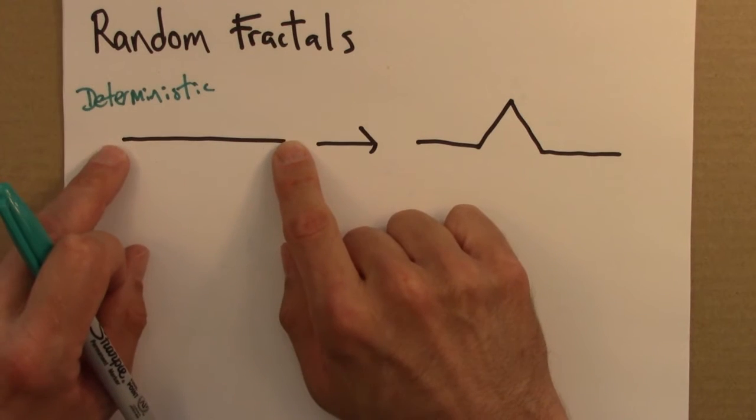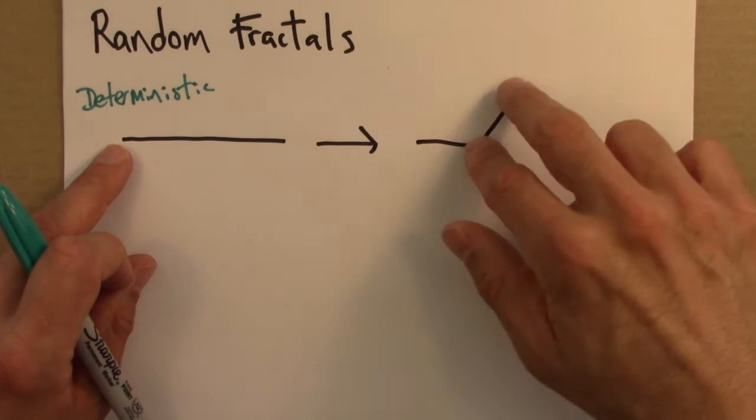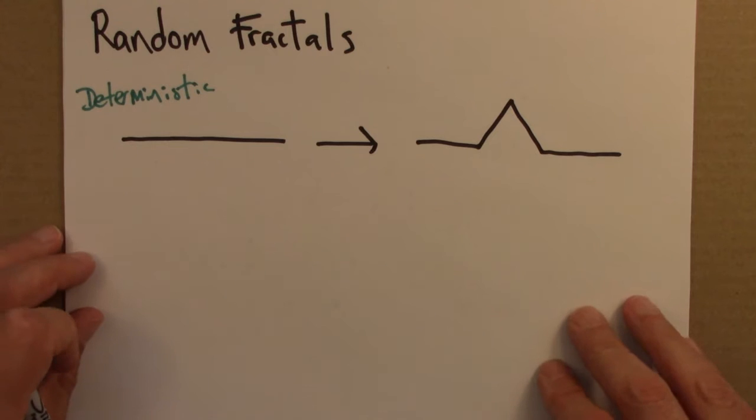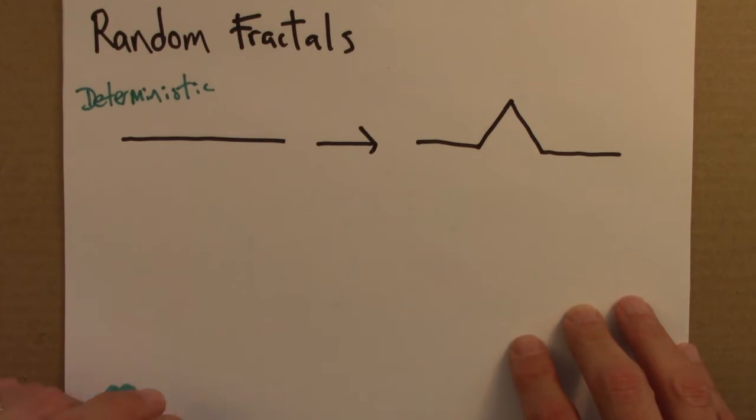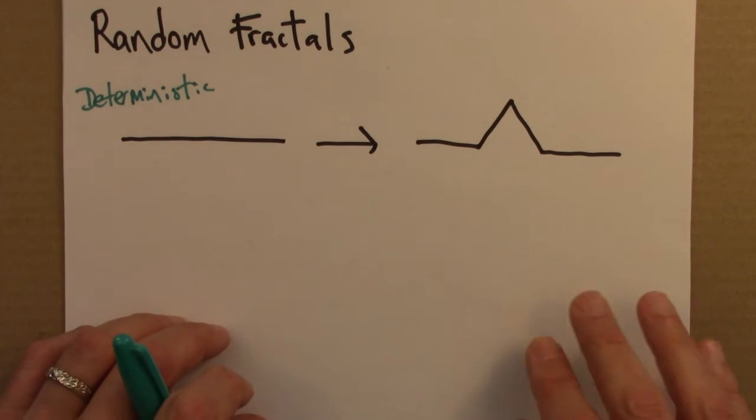So we take this shape, take this line, replace it with a bent line. Take those lines, replace them with bent lines. Or if we're making a Sierpinski triangle, we take a triangle, cut the middle triangle out of it. Take those triangles, cut the middle triangle out of them. So those are deterministic rules. There's no element of chance or choice.